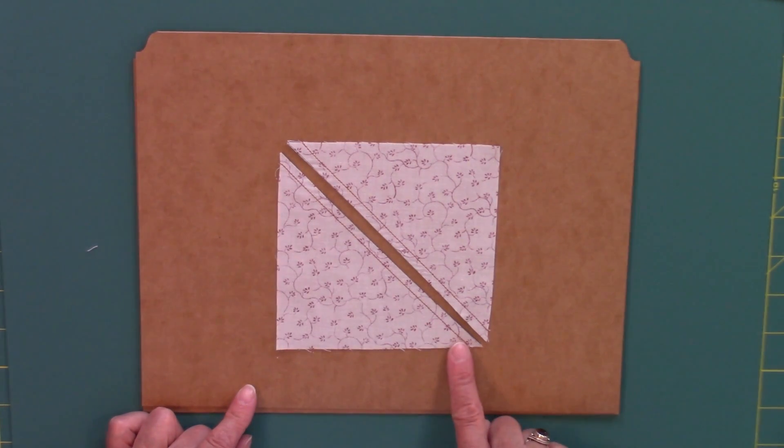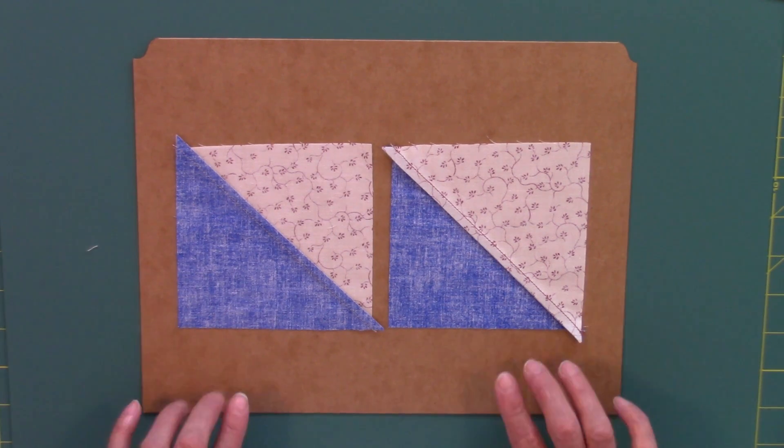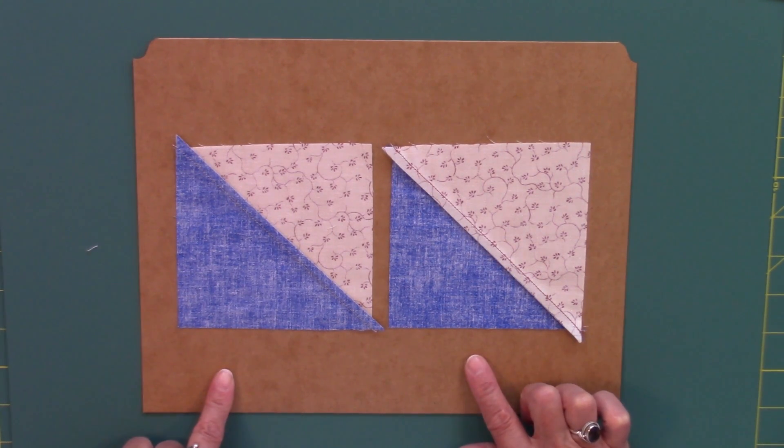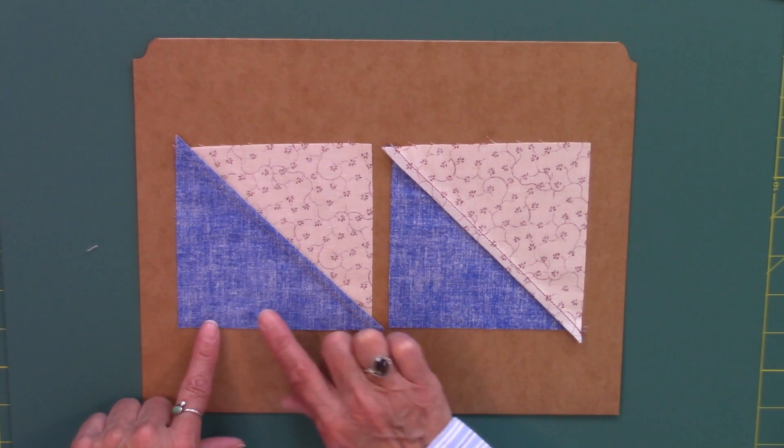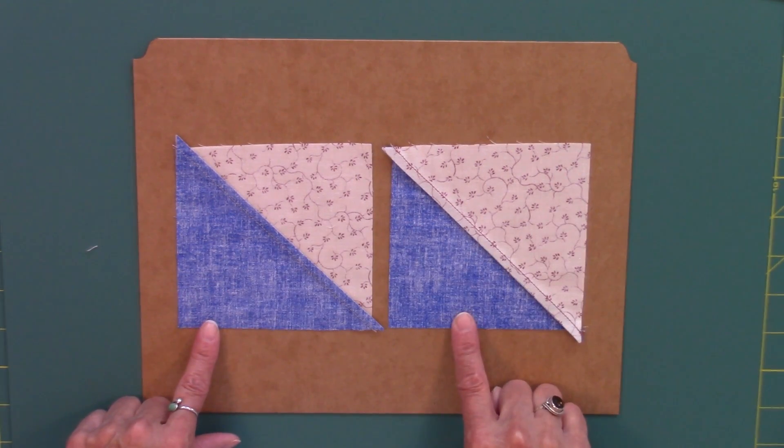After the seams have been sewn on each side of the diagonal line you can go ahead and cut. After the unit has been cut on the diagonal line it's time to press and for the star block I press one of the half square triangles to the light and the other one to the dark.